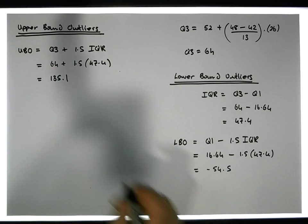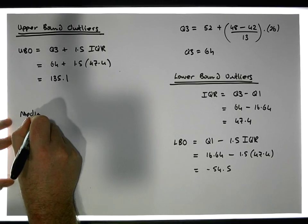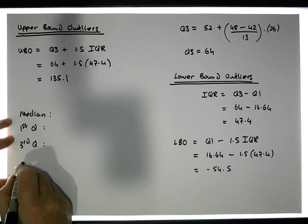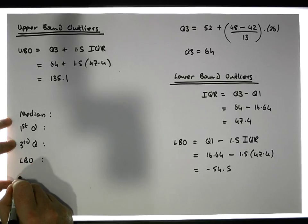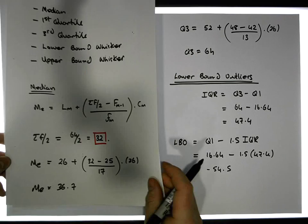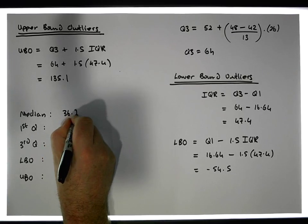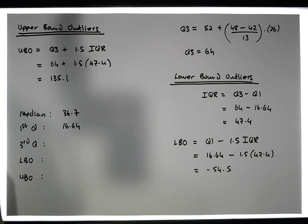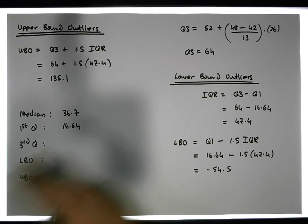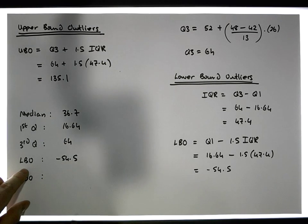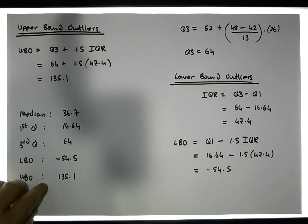To summarize all of our statistics: our median is 36.7, our first quartile is 16.64, our third quartile is 64, our lower bound outliers are at minus 54.5, and our upper bound outliers are at 125.1.